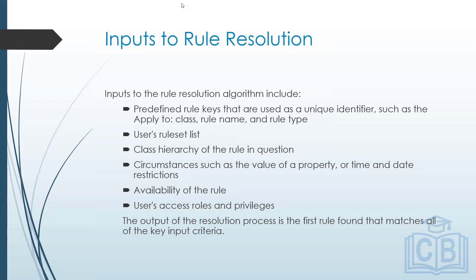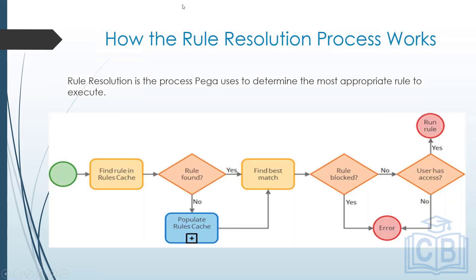Now let's look at what this algorithm looks like. This is a standardized process. The first thing that happens is finding the rules in the rules cache. Pega gives us different caches for different entities — one of which is the rules cache, which stores all rules related to your application.